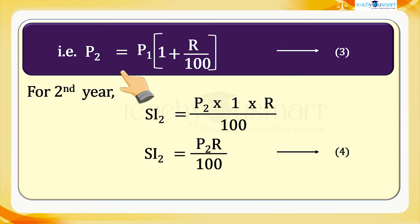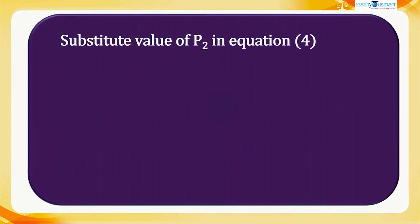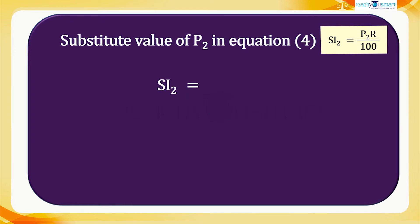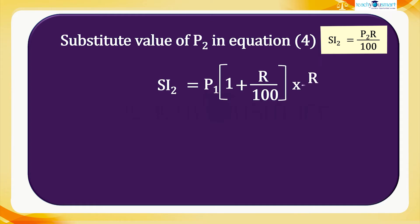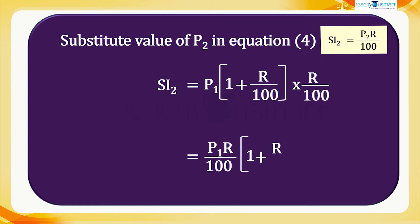We have P₂ equals P₁ × (1 + r/100). Substituting the value of P₂ in equation 4: SI₂ equals P₁ × (1 + r/100) × r/100, which equals P₁r/100 × (1 + r/100).